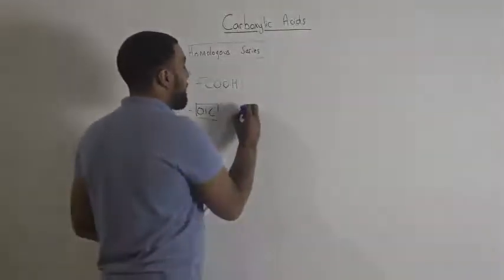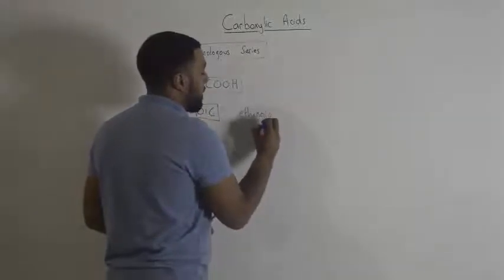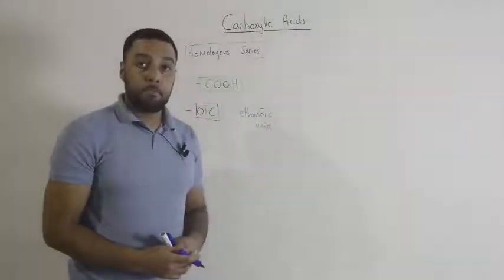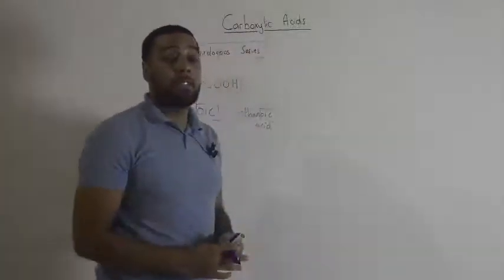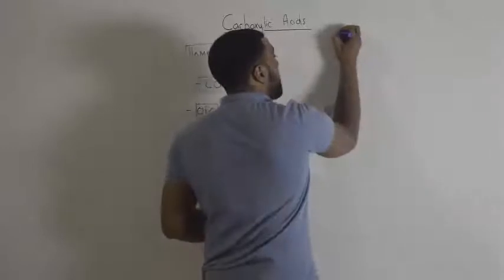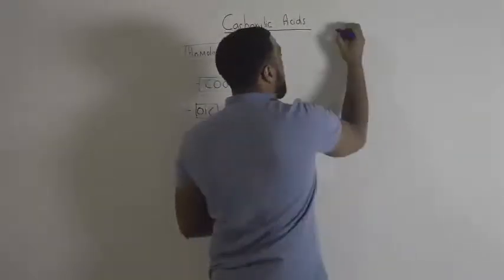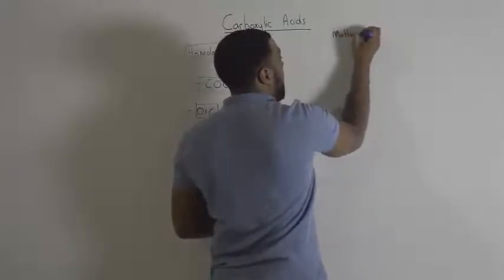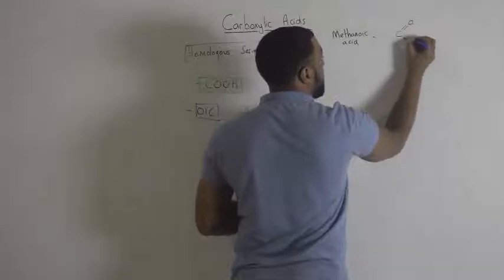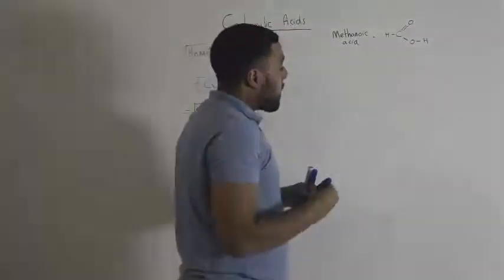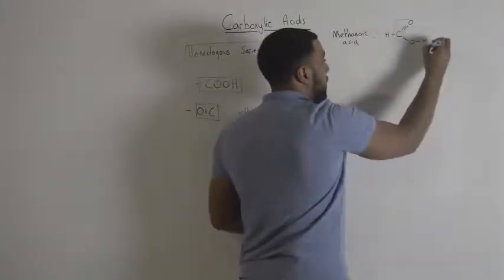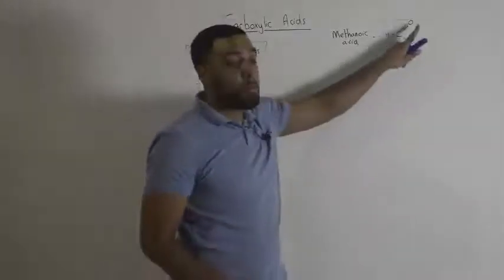For example, we have ethanoic acid. There are three carboxylic acids that you guys are expected to be able to draw and recognize in your exam. The first one is methanoic acid. Methanoic acid has one carbon here, and you can see our functional group over there. We have our COOH group over here.